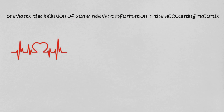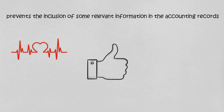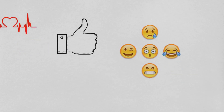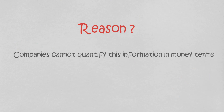The monetary unit assumption is vital to applying the historical cost principle. This assumption prevents the inclusion of some relevant information in the accounting records — for example, the health of a company's owner, the quality of service, and the morale of employees are not included, because companies cannot quantify this information in money terms. Though this information is important, companies record only events that can be measured in monetary terms.